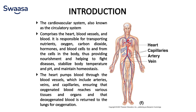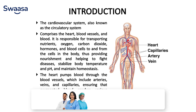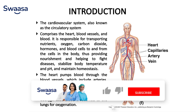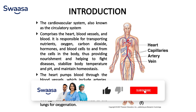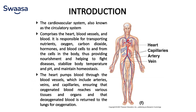The heart pumps blood through the blood vessels, which includes arteries, veins, and capillaries, ensuring that oxygenated blood reaches various tissues and organs and that deoxygenated blood is returned to the lungs for oxygenation.